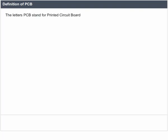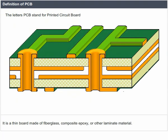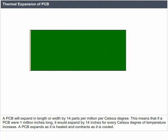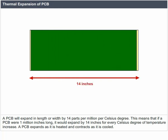Definition of PCB: The letters PCB stand for printed circuit board. It is a thin board made of fiberglass, composite epoxy or other laminate material. Conductive pathways are etched or printed onto the board, connecting different components on the PCB such as transistors, resistors and integrated circuits. A PCB will expand in length or width by 14 parts per million per Celsius degree. A PCB expands as it is heated and contracts as it is cooled.